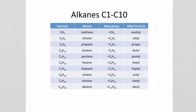Here's a table with the first ten alkanes, one through ten. The lowest, CH4, has the name methane. If it appears as a side chain — a side chain with only one carbon — we call it methyl. Two carbons is ethane, and a two-carbon side chain is ethyl, and so on up to C10.